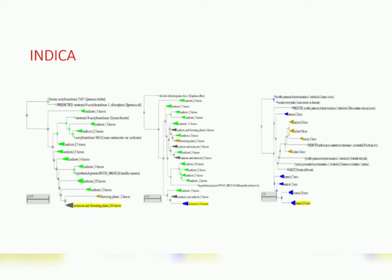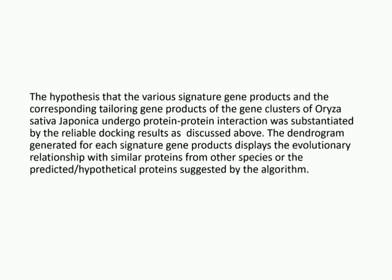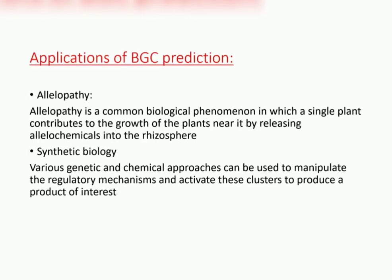For the next stage, we have picked the terpene synthase gene as the candidate gene and have collected over 80 to 100 terpene synthase genes across plant species, and we have done the same for non-terpenes as well to serve as control. The idea is to identify and extract unique conserved areas of these genes and then convert this data into numeric CSV format to be used as training data for the tool we are developing. Biosynthetic gene cluster identifying tools such as Plantismash find their use in areas such as allelopathy and synthetic biology, making such tools of great importance.